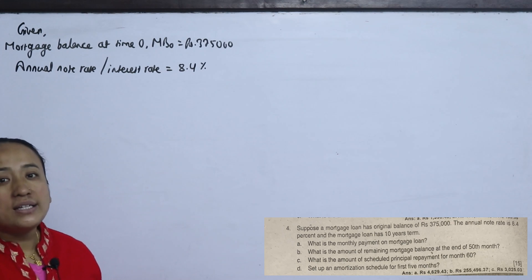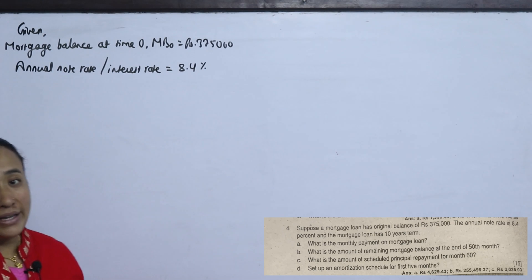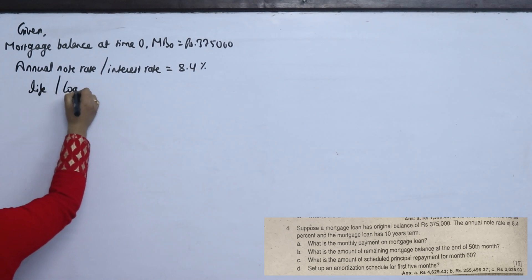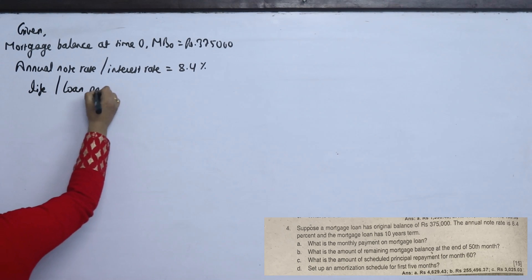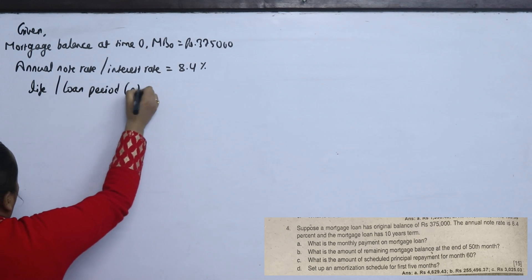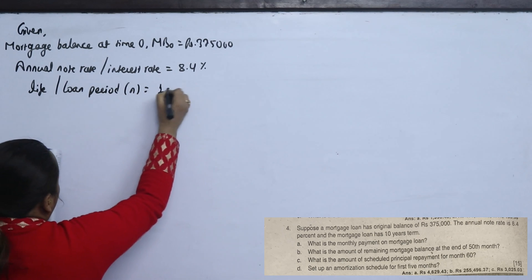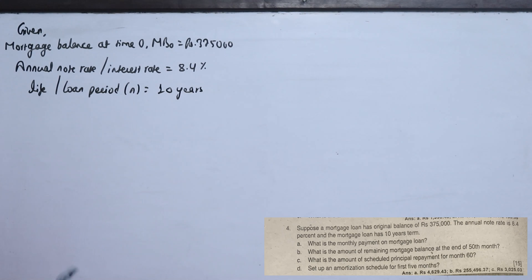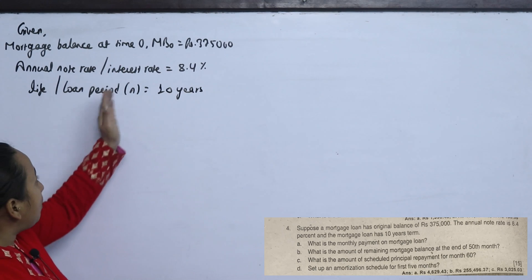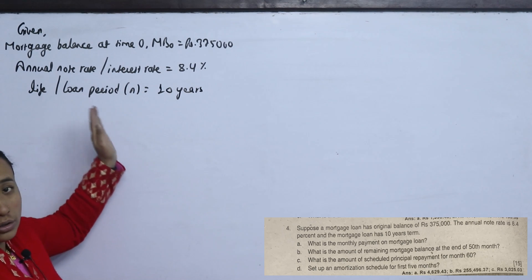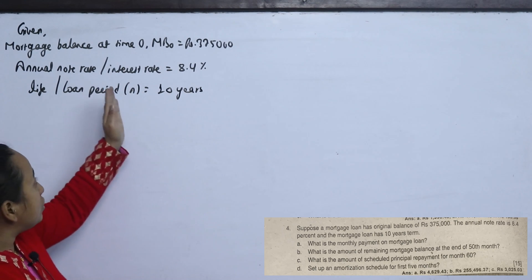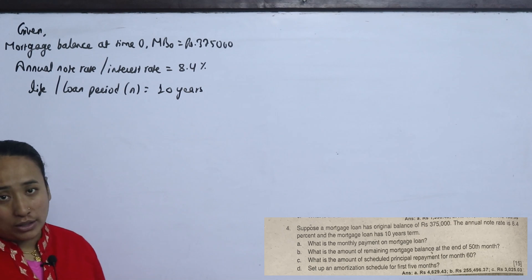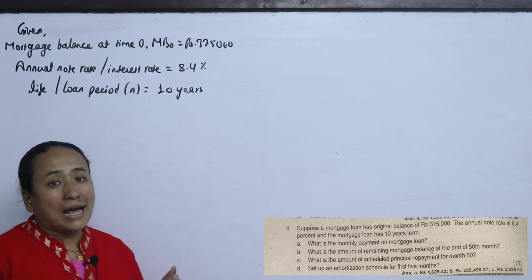The mortgage loan has a 10-year term, meaning the total loan period is 10 years. Since the calculation is done on a monthly basis, we convert the annual interest rate and loan period to monthly terms. The annual interest rate of 8.4% is divided by 12 to get the monthly rate. The 10-year life is converted to 120 months.